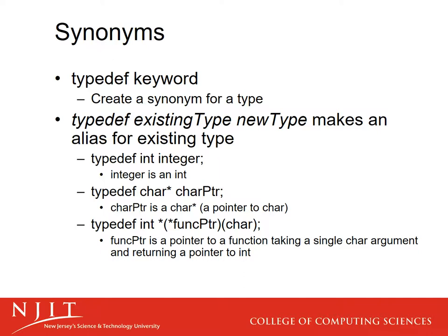For example, 'typedef int integer' says that 'integer' is defined to be an int — just a synonym. Everywhere your program sees 'integer', it uses 'int'. Special types you've seen, like size_t (the size of a string, map, or similar), are just typedef'd to some big unsigned integer. That's just a convenience. Similarly, 'typedef char* charPointer' means charPointer is an alias for a pointer to char — you don't have to type the whole thing out.